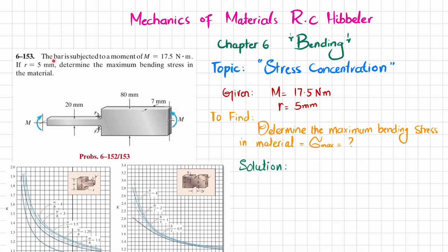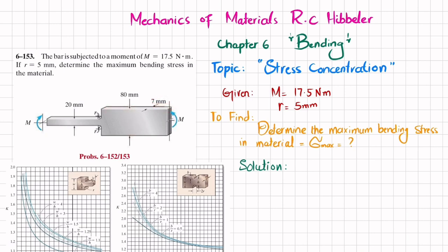The bar is subjected to a moment of 17.5 Newton meters. If R is 5 millimeter, determine the maximum bending stress in the material. The applied moment is 17.5 Newton meters. The cross-section has a height of 80 millimeter and thickness of 7 millimeter.